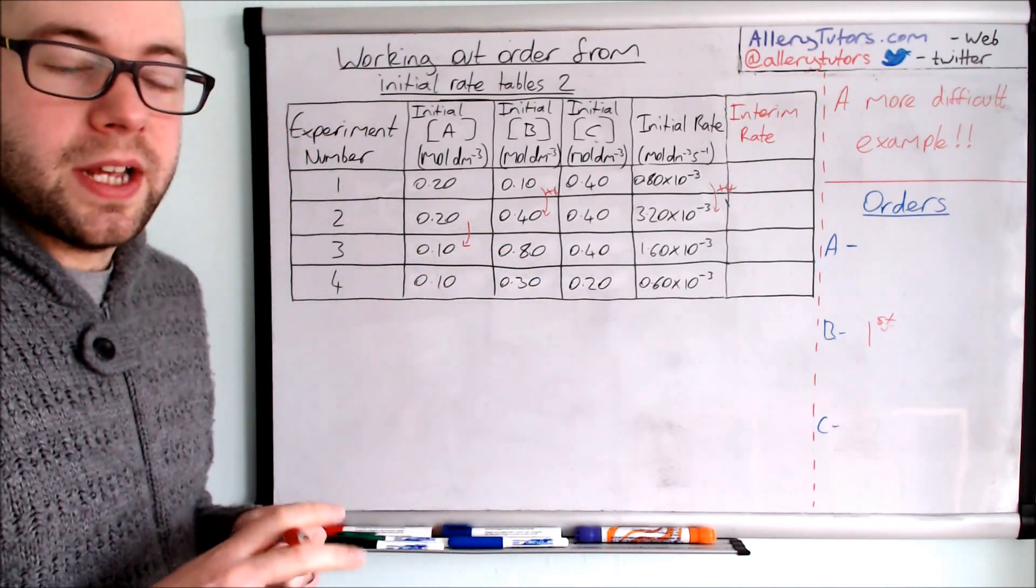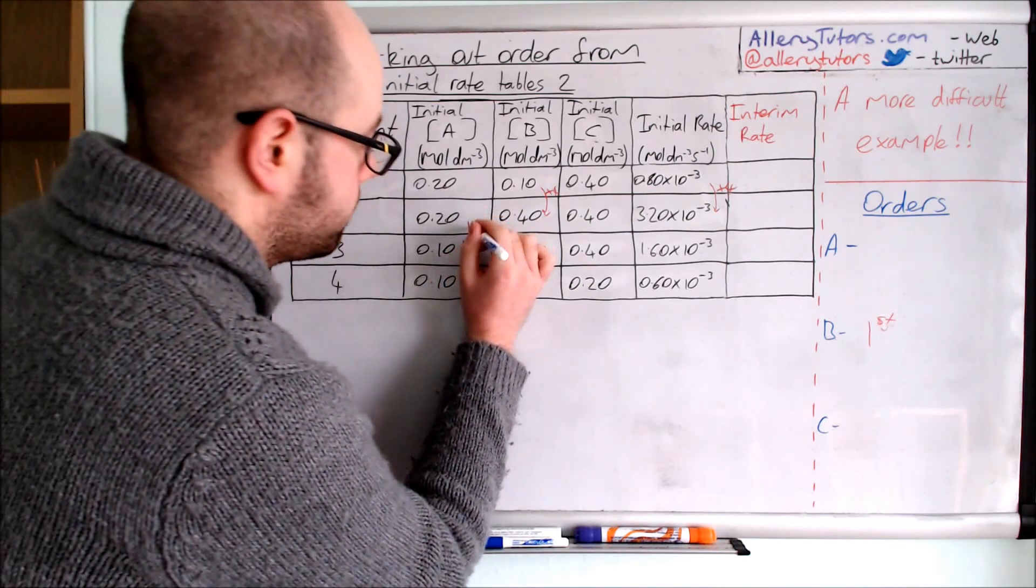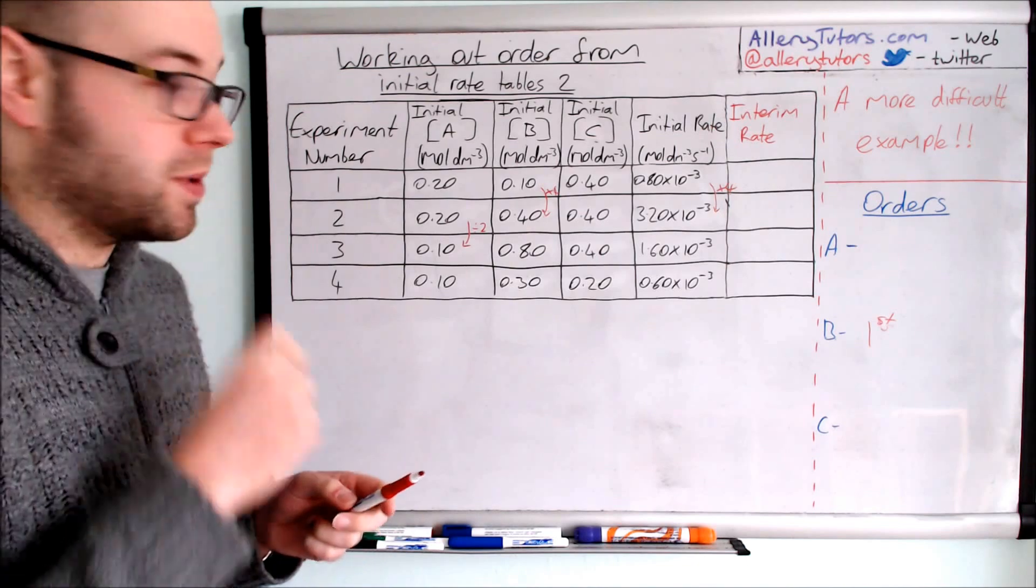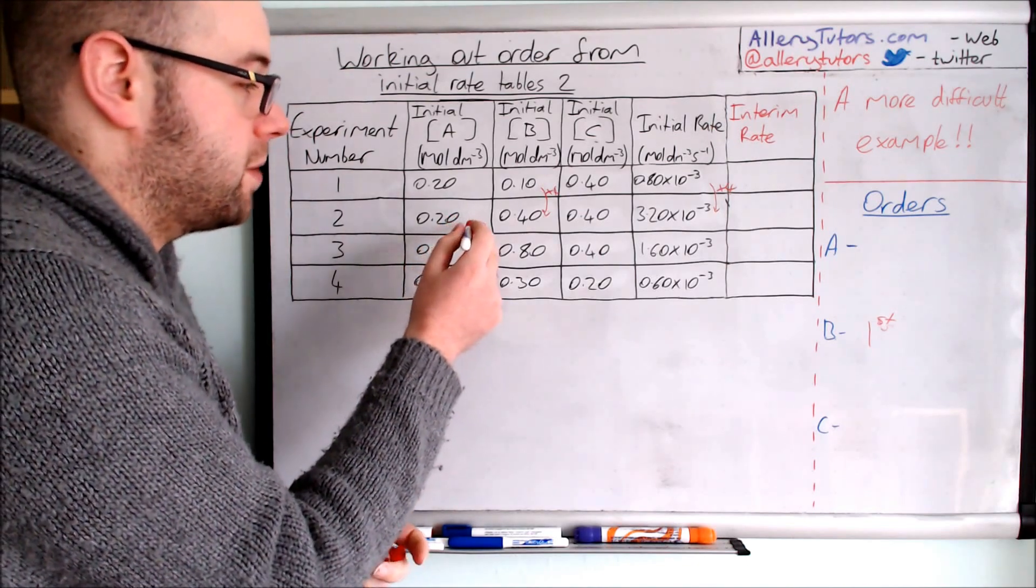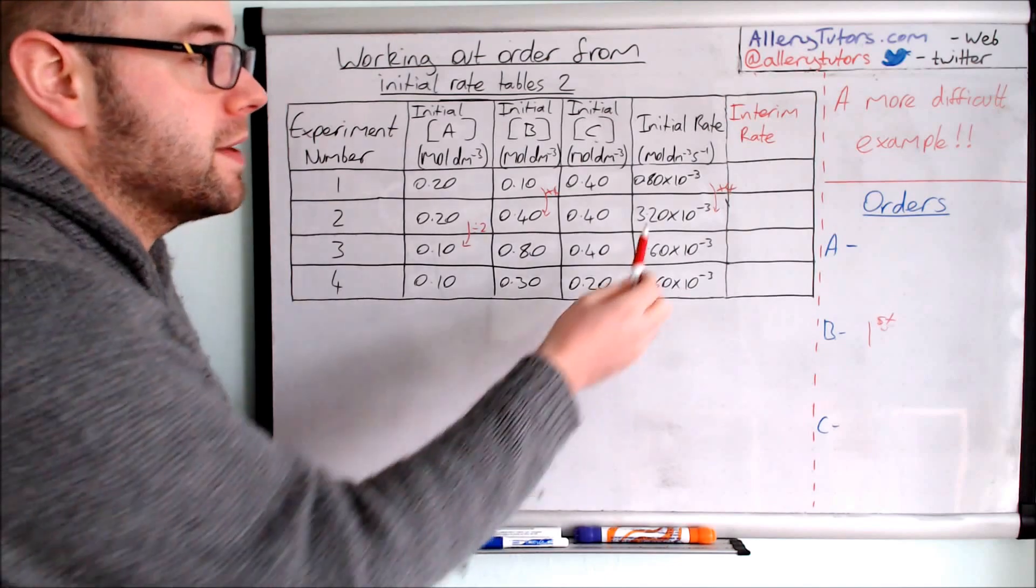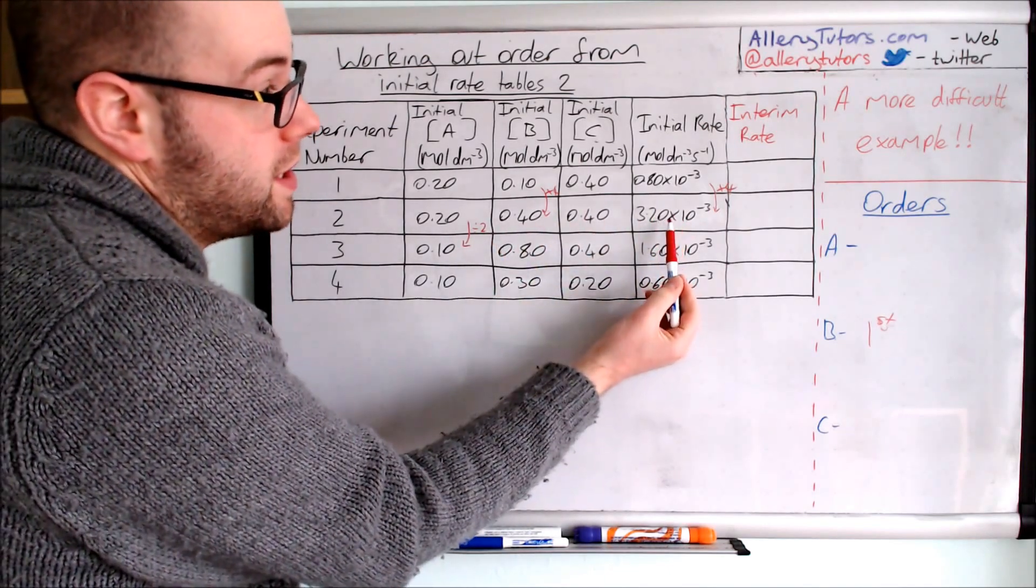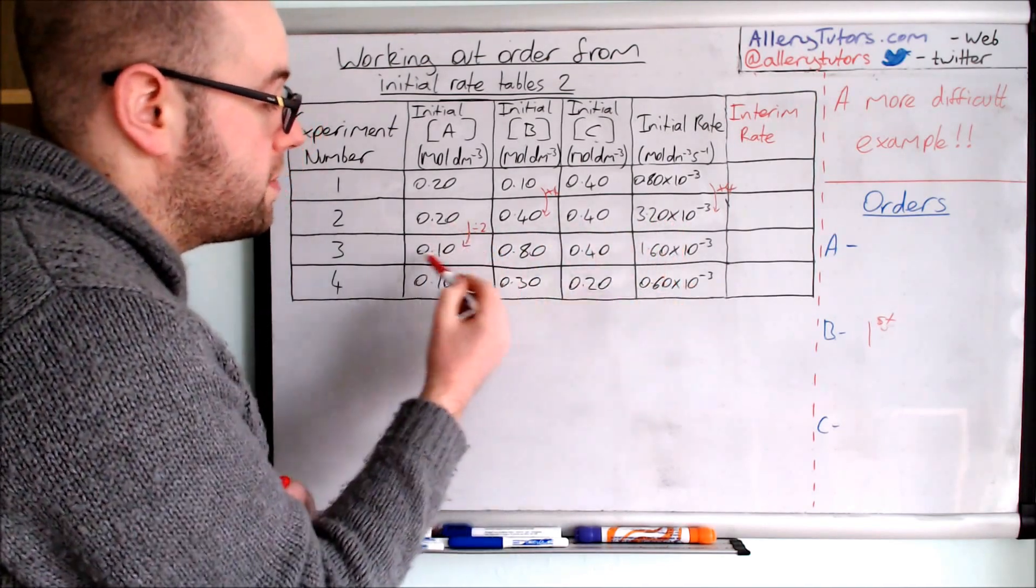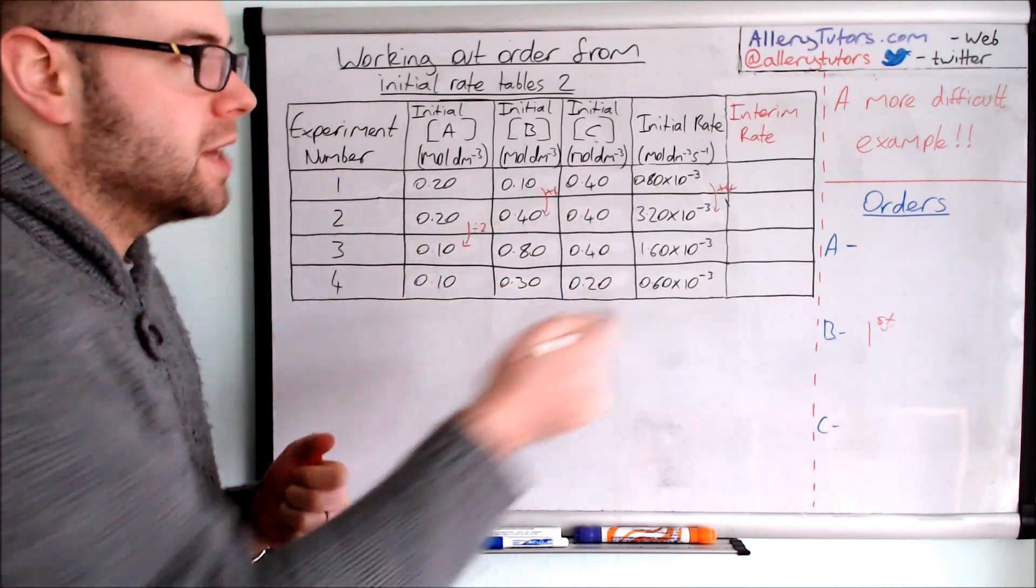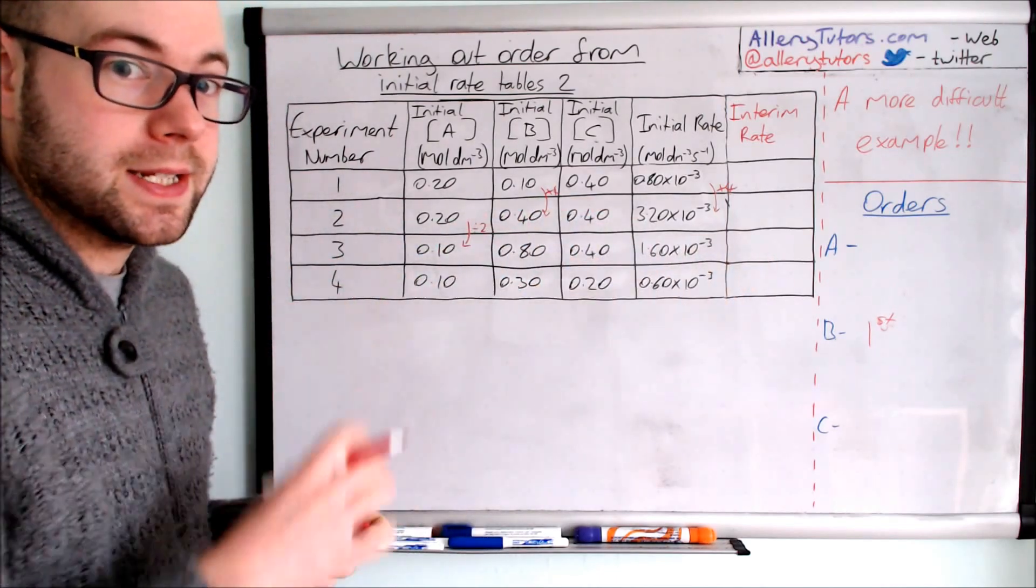This one is effectively being halved, divided by 2. But the problem is now because we've halved that, we have a problem because B is actually having an effect here as well. We can't say that the rate is changing purely because of A because B obviously has an effect as well because it's first order. This is where our interim rate comes in.